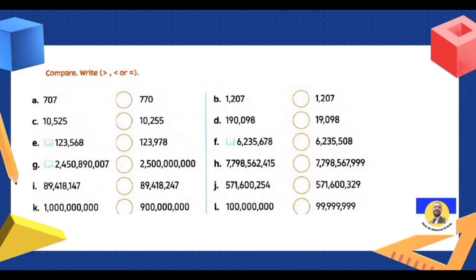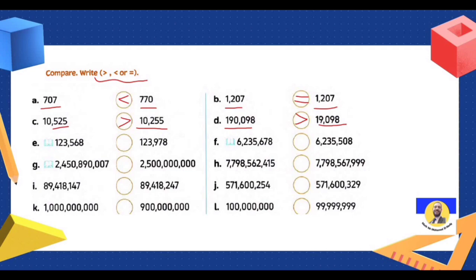Next question — compare using greater than, less than, or equal. Here 707 and 770: 770 is the greatest. Next: 1207 and 1207 — both are equal. Next: 10,525 and 10,255 — 525 is greatest. Here it's six digits and here five digits — six digits is the greatest. Letter E: six digits and six digits — one, two, three at the same; five and nine — nine is the greatest.